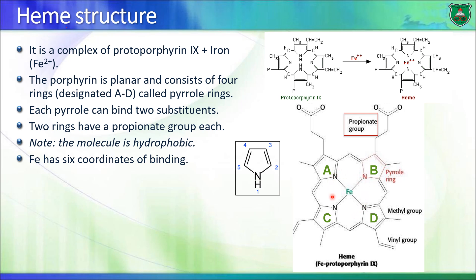In the center of the heme molecule, iron is bound covalently to all four pyrrole rings, forming four covalent bonds. The heme molecule is also characterized by side chains: methyl groups, vinyl groups, and propionate groups. The propionate groups are negatively charged, but overall the heme molecule is hydrophobic and planar — that is, flat. Iron can form six covalent bonds total: four with the pyrrole rings, leaving two available.